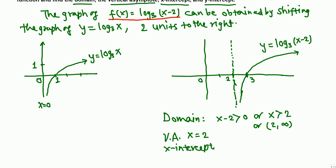For the x-intercept: the base function has x-intercept at (1, 0). Shifted 2 units to the right, the x-intercept becomes (3, 0).